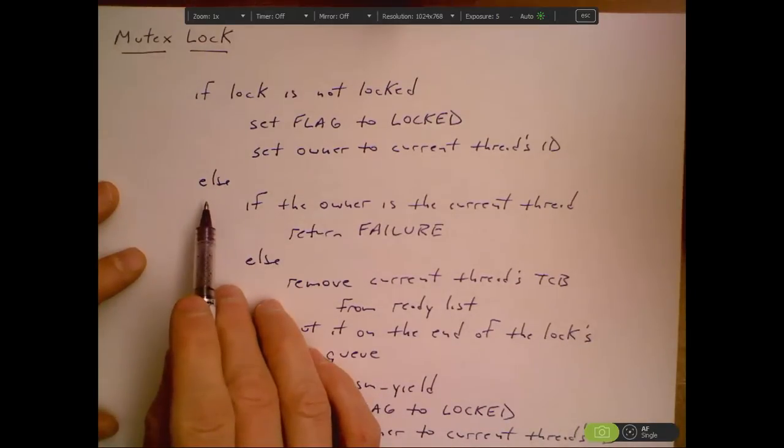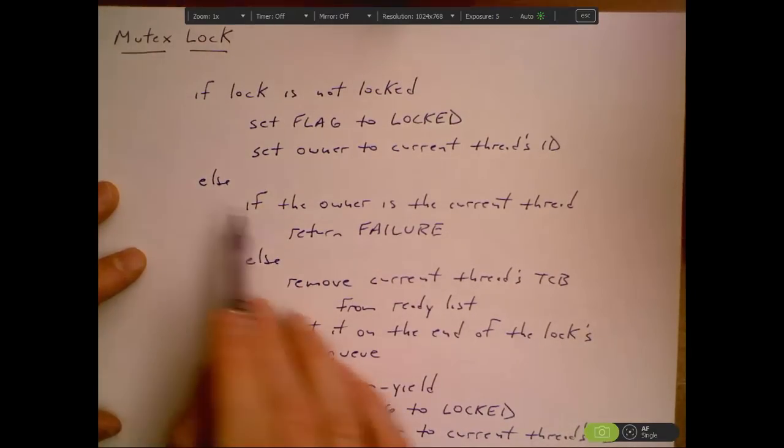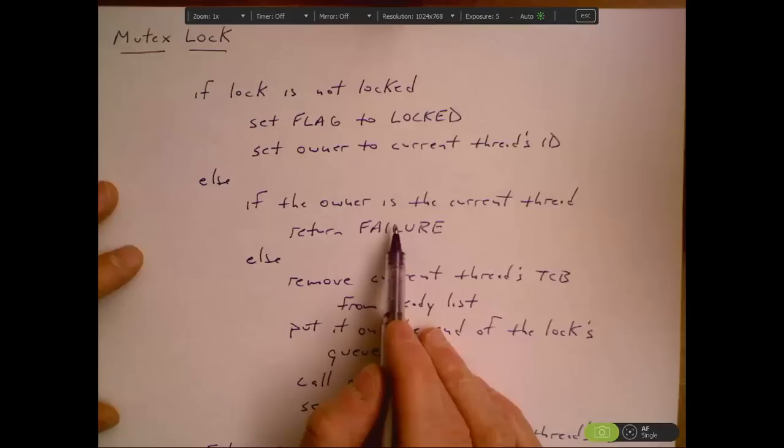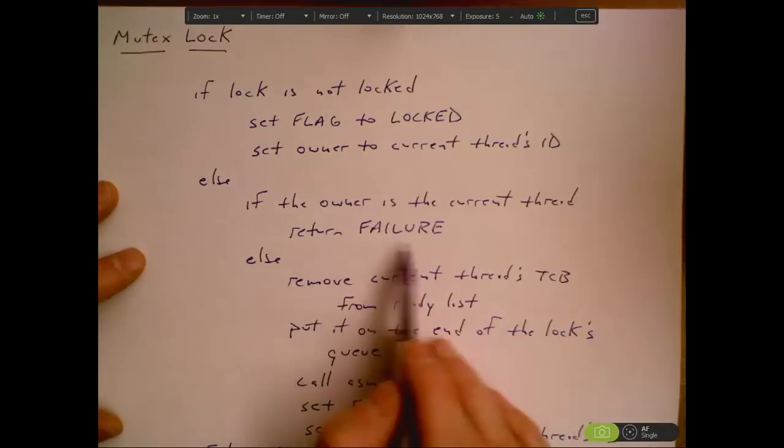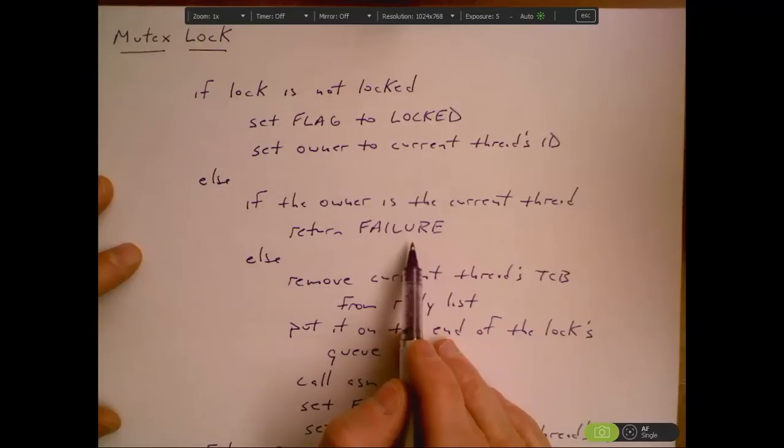Otherwise if the lock is already locked then we'll check, are we the owner? Does the caller already have the lock locked? If that's the case then we're going to return a failure code. We're not going to allow nested locking.